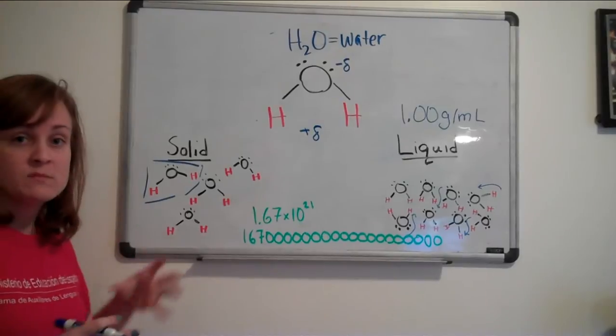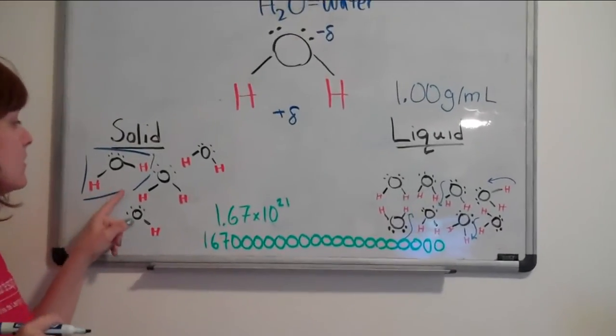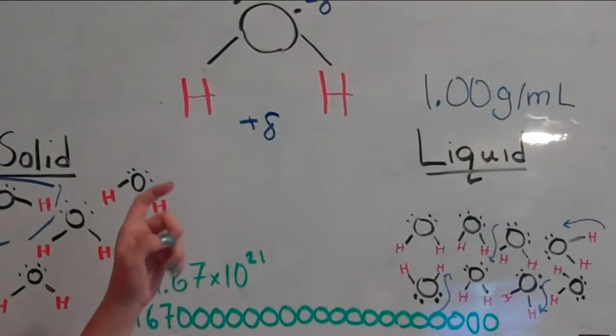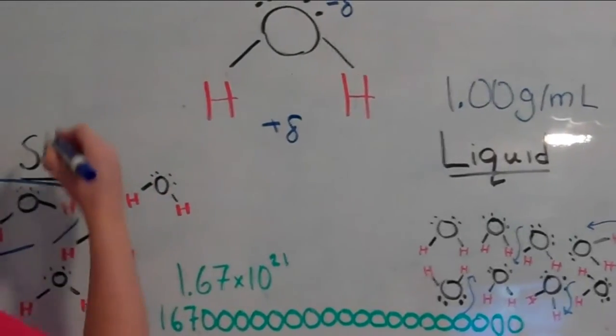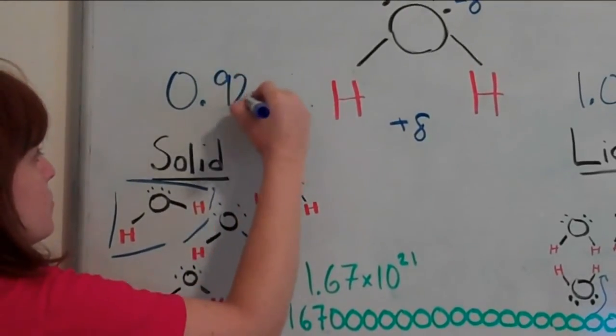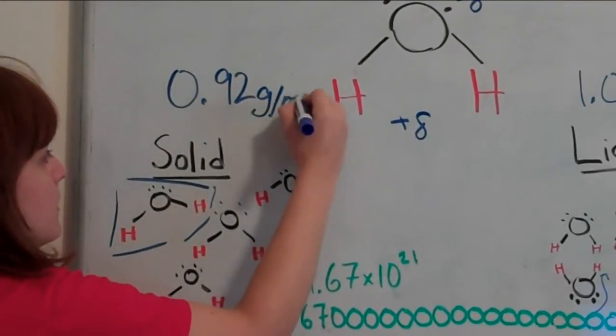When it's frozen, it's more spread out, so there are less water molecules in the same amount of space. The density of ice is about 0.92 grams per milliliter.